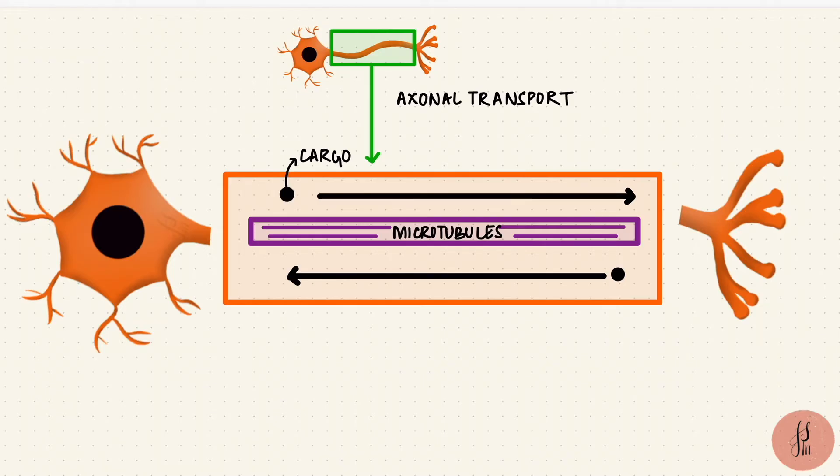The microtubules have a positive end and a negative end. In the axon, the positive end is towards the terminal, and the negative end is towards the cell body.